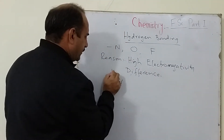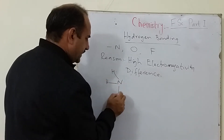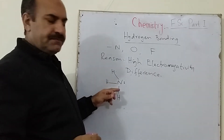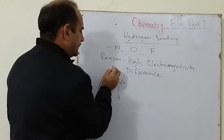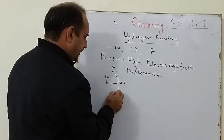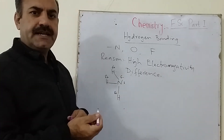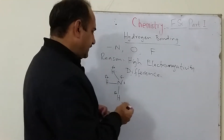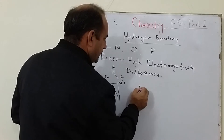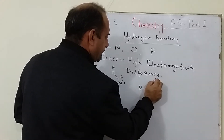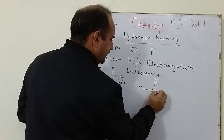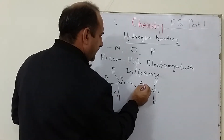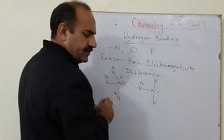Similarly, in ammonia, nitrogen and hydrogen are bonded together by covalent bonds. In the structure of ammonia there is a lone pair of electrons on the nitrogen atom; hydrogen atoms are partially positive and nitrogen is partially negative. When two molecules of ammonia come close to each other, the nitrogen of one molecule attracts the hydrogen of the other molecule, and this kind of attraction is called hydrogen bonding.